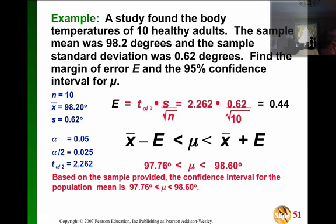That's the value that replaces 1.96 from the z table. This is the new estimate due to the lower sample size and the unknown standard deviation. So you've got 2.262 times 0.62 over the square root of n, which gives you 0.44. So that's your error estimate.